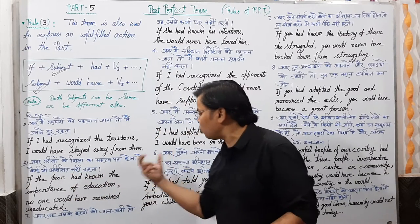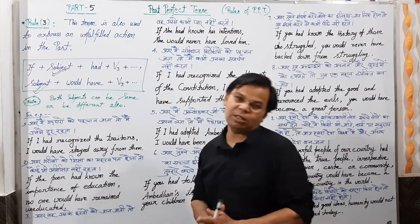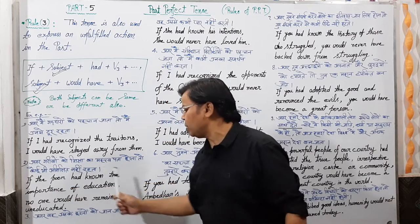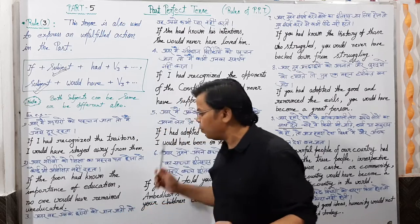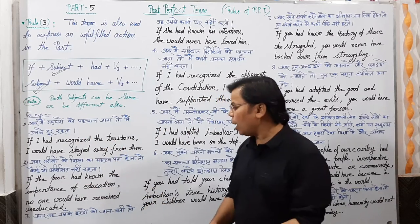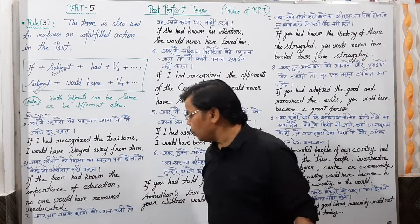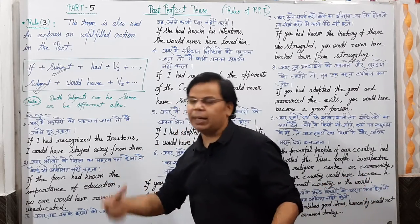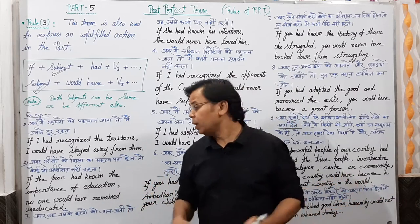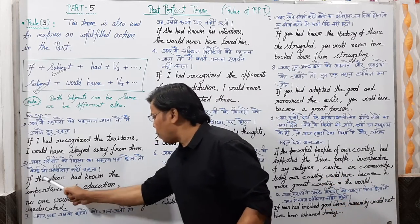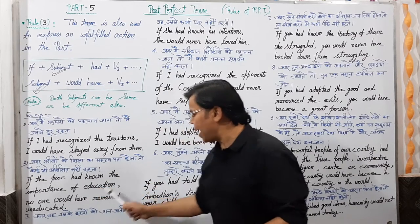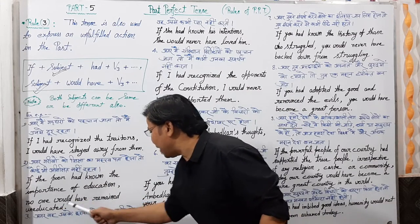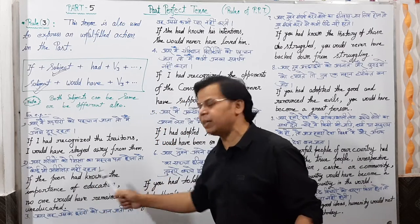Second sentence है: if the poor had known the importance of education, no one would have remained uneducated. अगर गरीब लोगों को education की importance पता होती, तो कोई भी uneducated नहीं रहता। इसी sentence को दूसरी तरीके से बोल सकते हो: no one would have remained uneducated if the poor had known the importance of education.